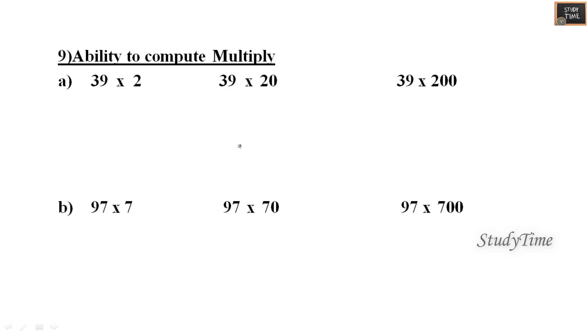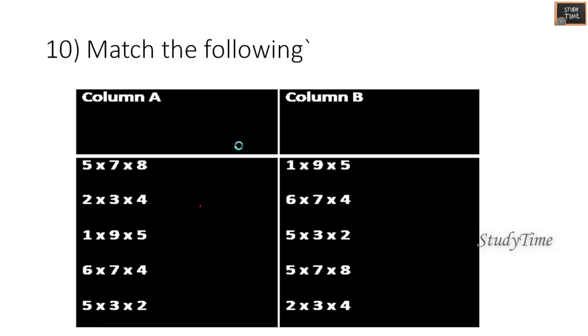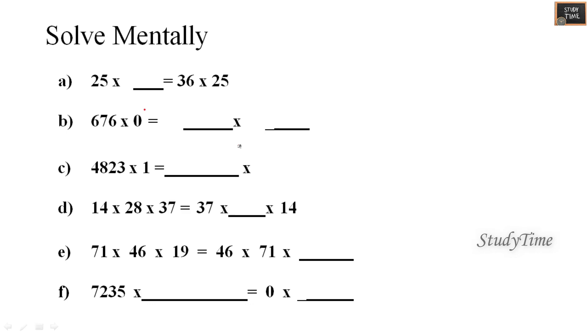Ability to compute, multiply. This you can do. Match the following: 5 into 7 into 8, this is easy, you have to match with the same number. Next solve mentally, 25 into 36. Here it is 0, 6, 7, 6. Here it is 4, 8, 2, 3 into 1. Here it is 28, here it is 4, 19. 0, 7, 2, 3, 5, both the sides it should be equal.